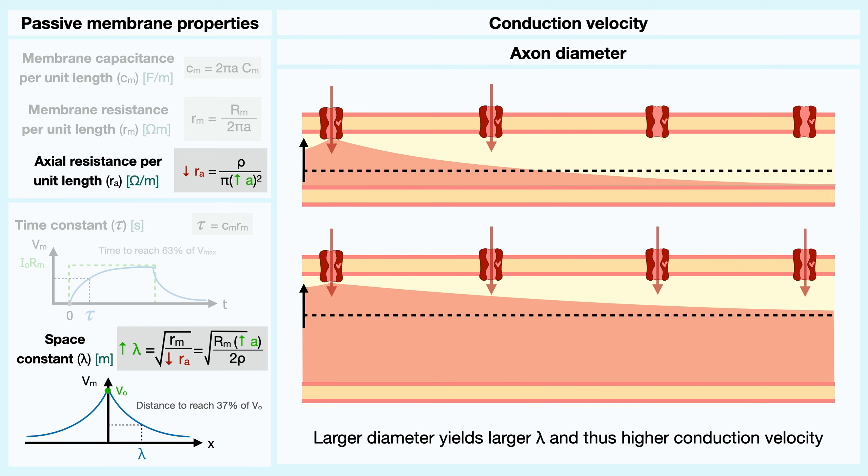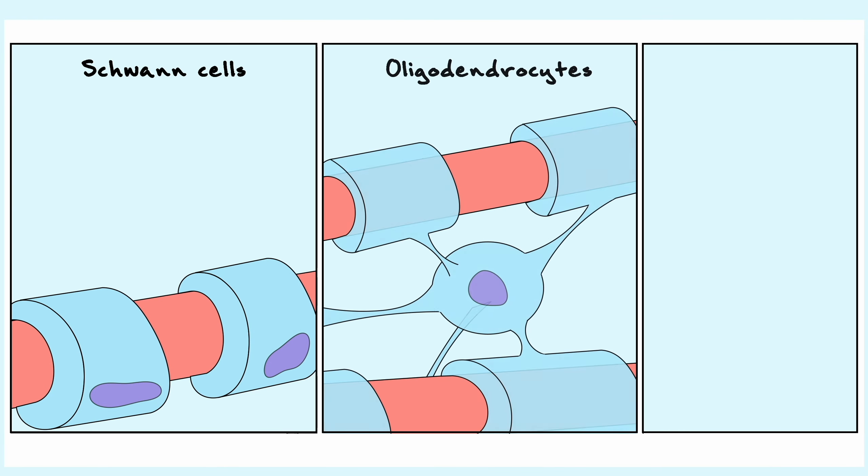To understand the second mechanism, we first must discuss where myelin comes from. Myelin is provided in the body by two different specialized glial cells, the Schwann cells and the oligodendrocytes.